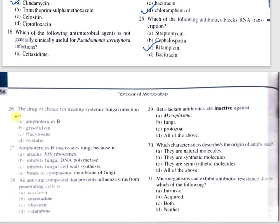Question number 26: The drug of choice for treating systemic fungal infections is — A, amphotericin B; B, cephalosporin; C, flucytosine; D, nystatin. The correct option is A, amphotericin B. Question number 27: Amphotericin B injures fungi because it — A, attacks 30S ribosomes; B, inhibits fungal DNA polymerase; C, inhibits fungal cell wall synthesis; D, binds to the cytoplasmic membrane of fungi. The correct option is D. It binds to the cytoplasmic membrane, blocks sterol synthesis, forming pores in the fungal cell membrane, and the fungal cell disrupts.